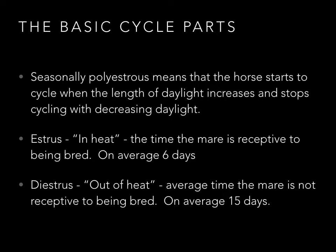This is different depending on where you are. In the southern hemisphere, the shortest daylight is in June and the longest is in December, whereas in North America the shortest is December and the longest is June. There are two parts of the heat cycle called estrus and diestrus. Estrus is where the mare is in heat — on average for six days she is receptive to being bred. When she is out of heat, that's diestrus, an average of 15 days. Fifteen and six makes 21, and 21 days is the whole cycle of the mare.